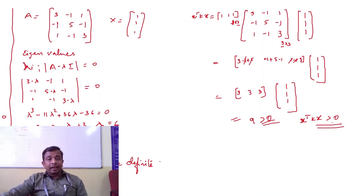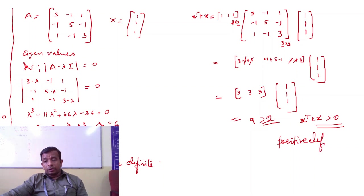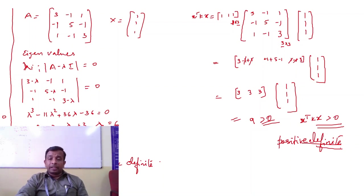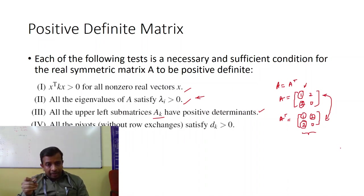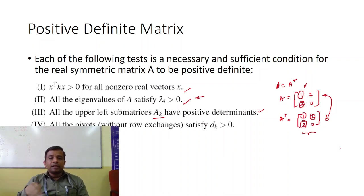Hence we can conclude that the given matrix A = [3, −1, 1; −1, 5, −1; 1, −1, 3] is positive definite. I request viewers to check the other two conditions — upper-left sub-matrix determinants and pivots — by themselves and follow the method. This topic generally comes for four or six marks in examinations.